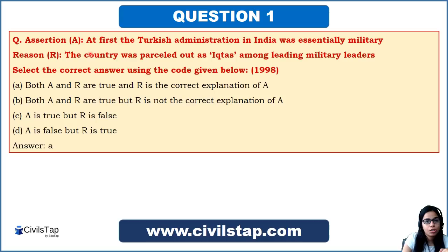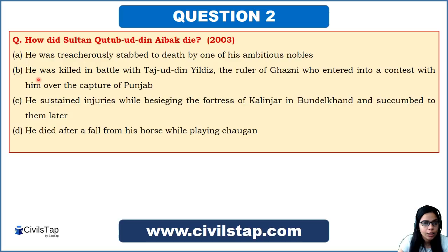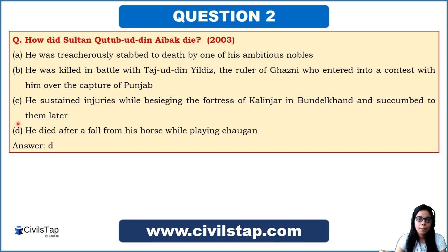A question from the 2003 prelims asks: how did Sultan Qutubuddin Aibak die? We have discussed this — Qutubuddin Aibak died after a fall from his horse while playing Chogan, which is called polo. So the answer is option D. This is a very straightforward question covered in NCERT on Delhi Sultanate.